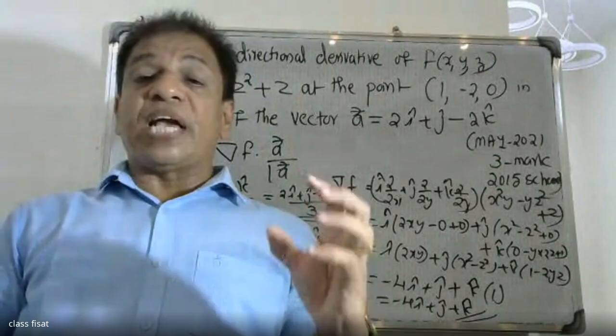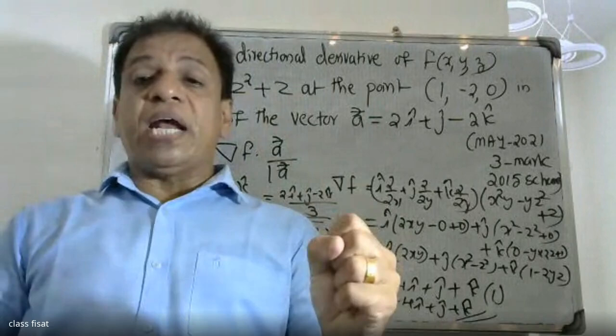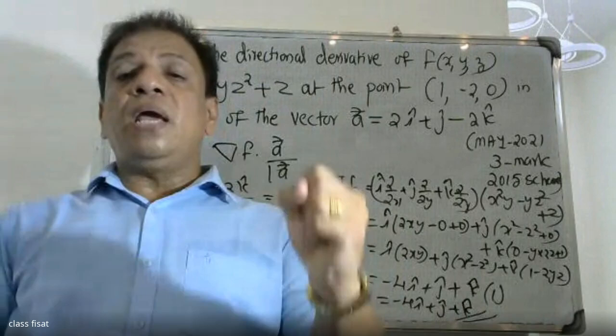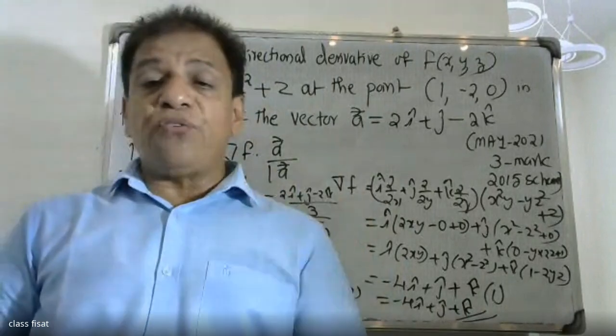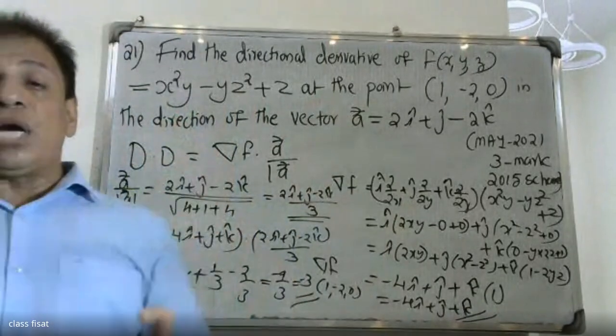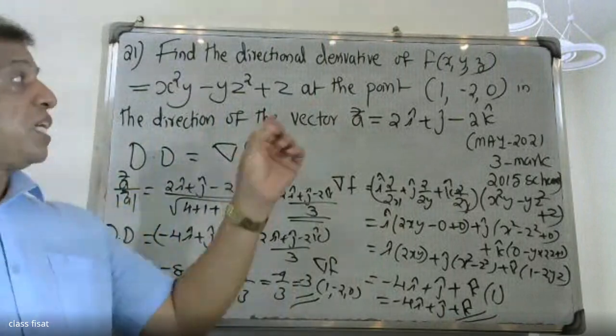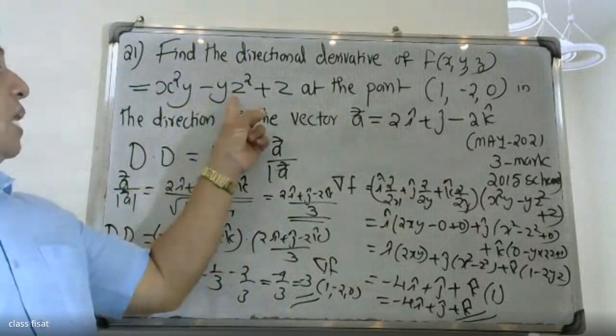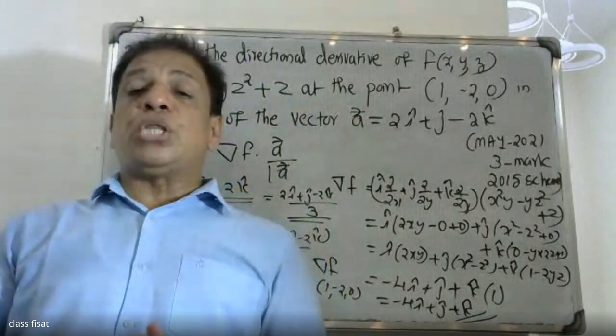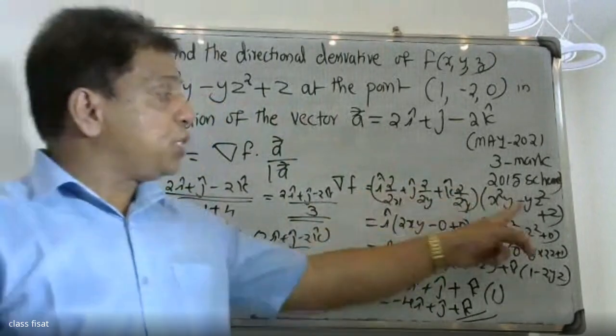The directional derivative equals gradient f dot vector a divided by modulus of a. The gradient operator i ∂/∂x + j ∂/∂y + k ∂/∂z applied to the function x²y - yz² + z, substituting and partially differentiating each component.